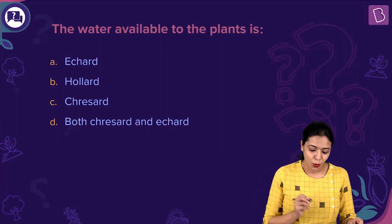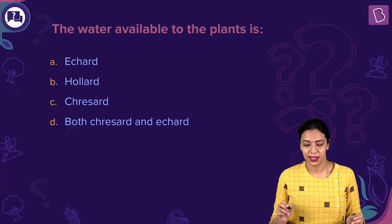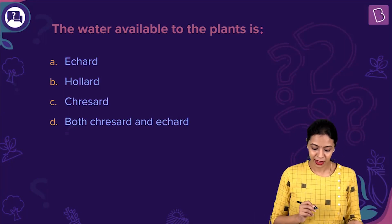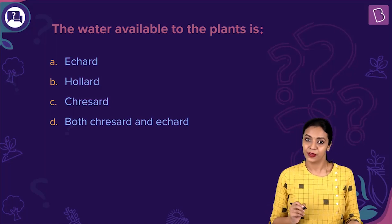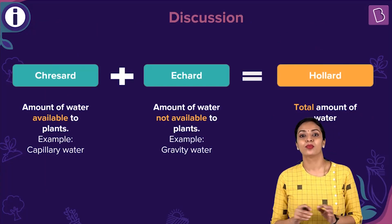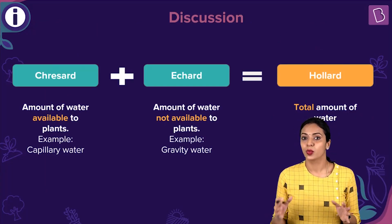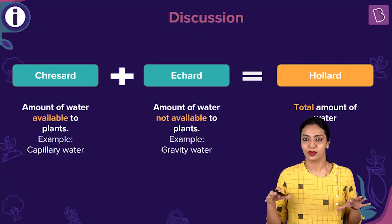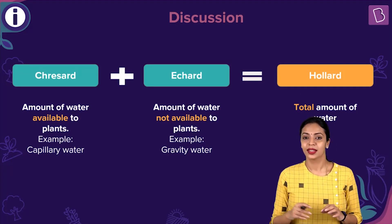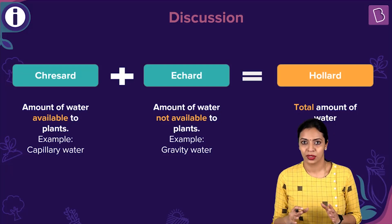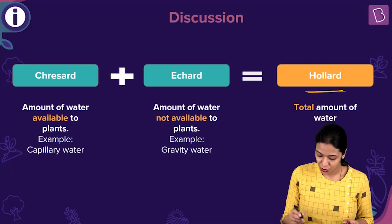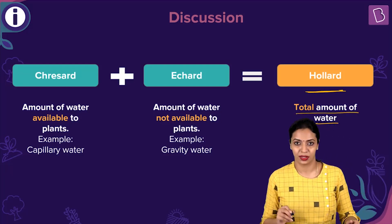Here is the question: the water available to the plants is — options are Echard, Holard, Cressard, and both Cressard and Echard. Most terrestrial plants get their water from the soil through elaborate root systems. There is water present in the soil, and the total amount of water found in the soil is known as Holard. Holard is the term used to represent the total amount of water present in the soil.